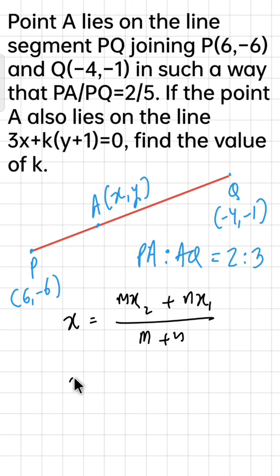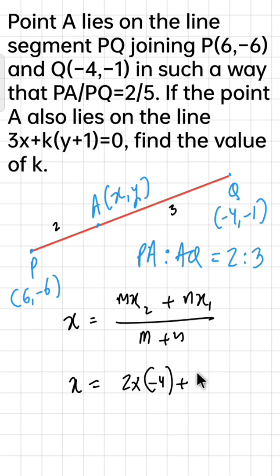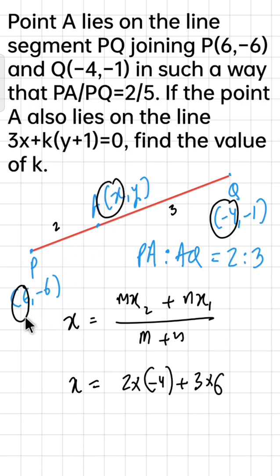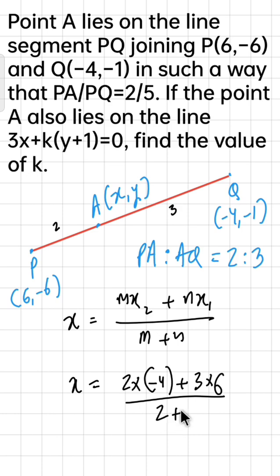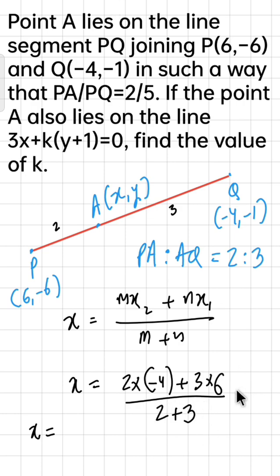Formula use करते हैं। X = (M·X2 + N·X1) / (M + N)। M की value 2 है, X2 की value है -4; N की value 3 है, X1 की value है 6। तो X = (2×(-4) + 3×6) / (2+3) = (-8 + 18) / 5 = 10/5 = 2। X की value 2 आ चुकी है।